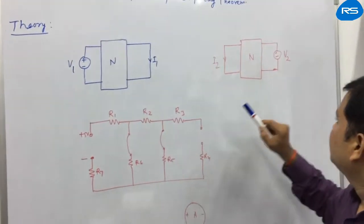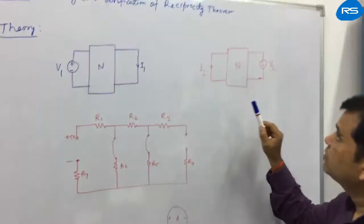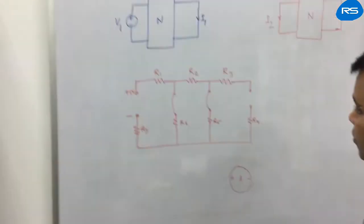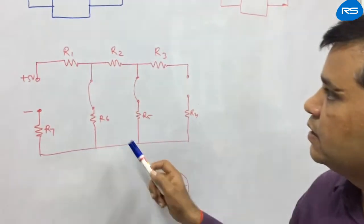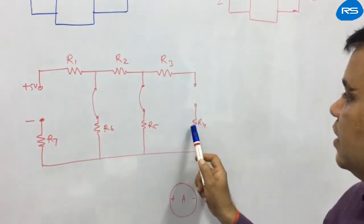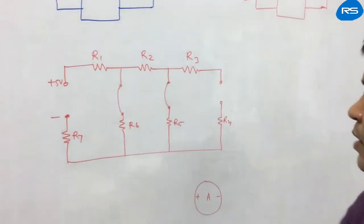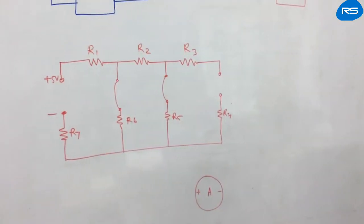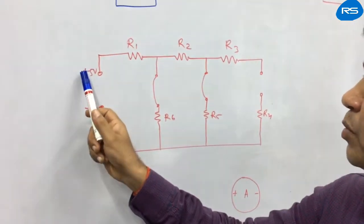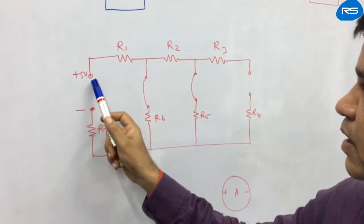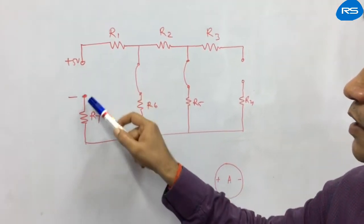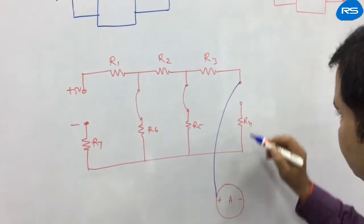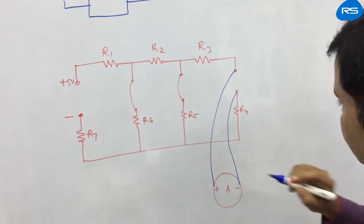This is about the reciprocity theorem. So in order to perform the experiment, we have a given circuit like this having resistances R1, R2, R3, R4, R5, R6, and R7. There is a short circuit between these terminals. Now in the first case, we will take plus 5 volt power supply and connect it at these two terminals and measure the current flowing through this resistance by connecting the ammeter in this way.